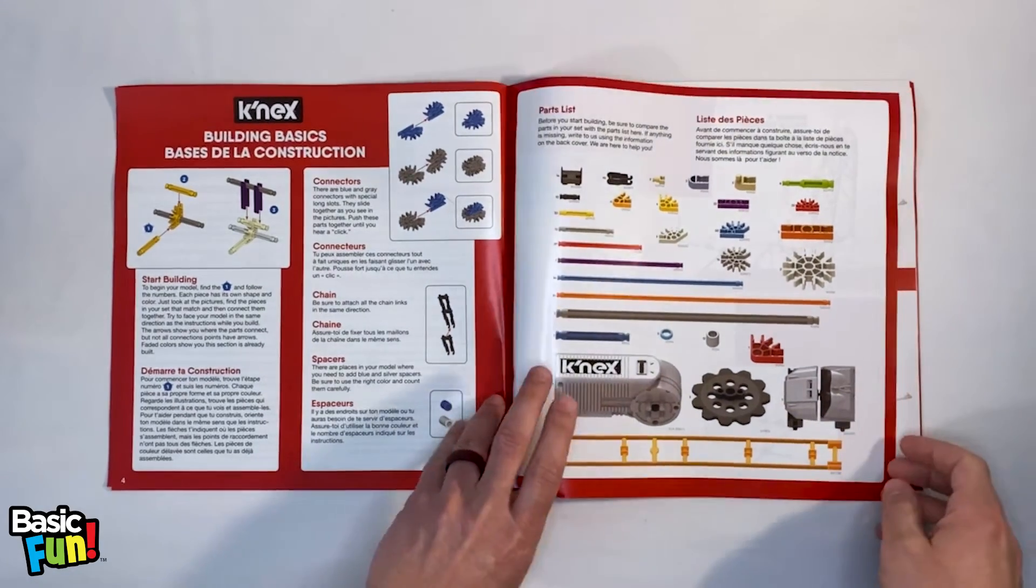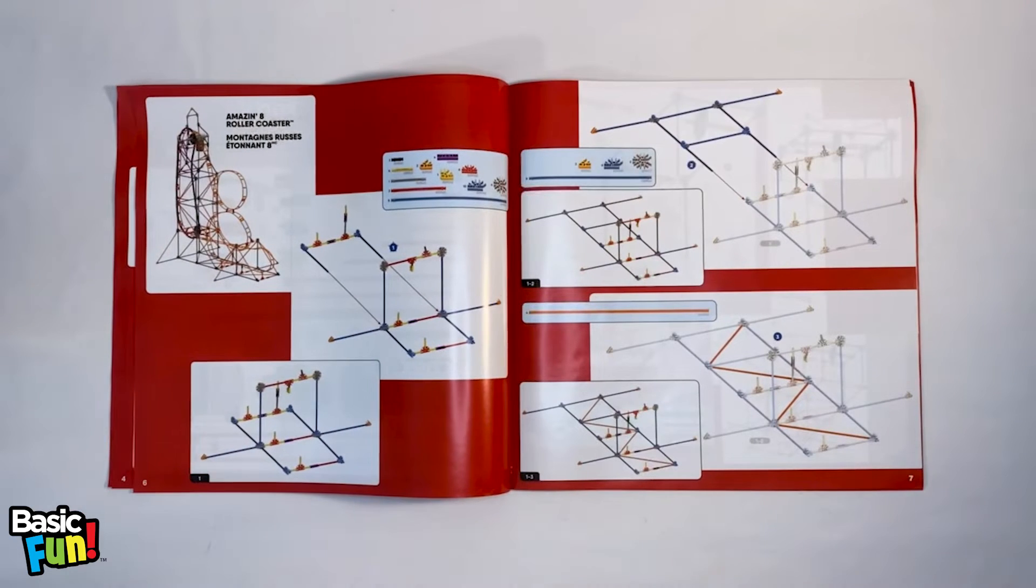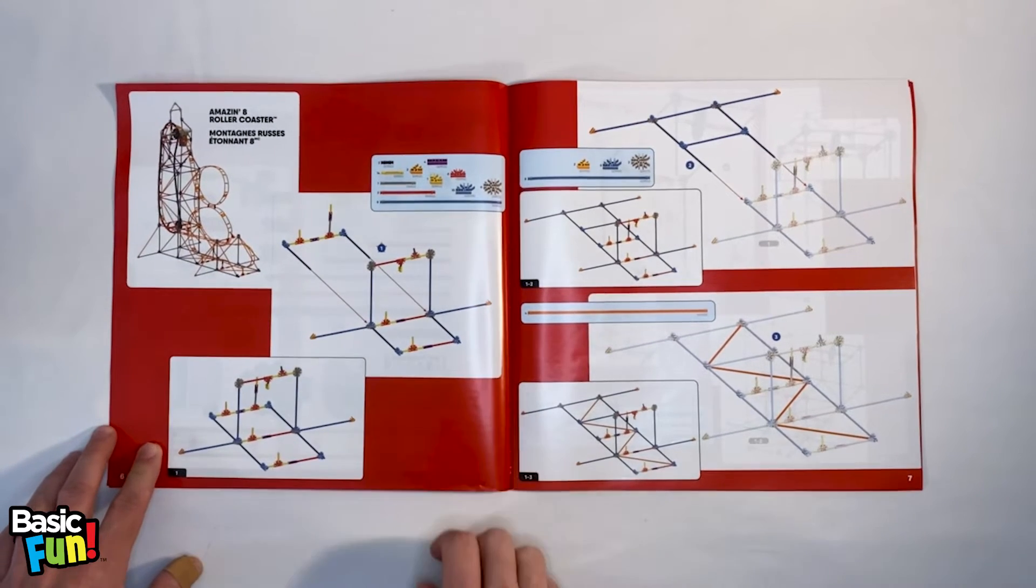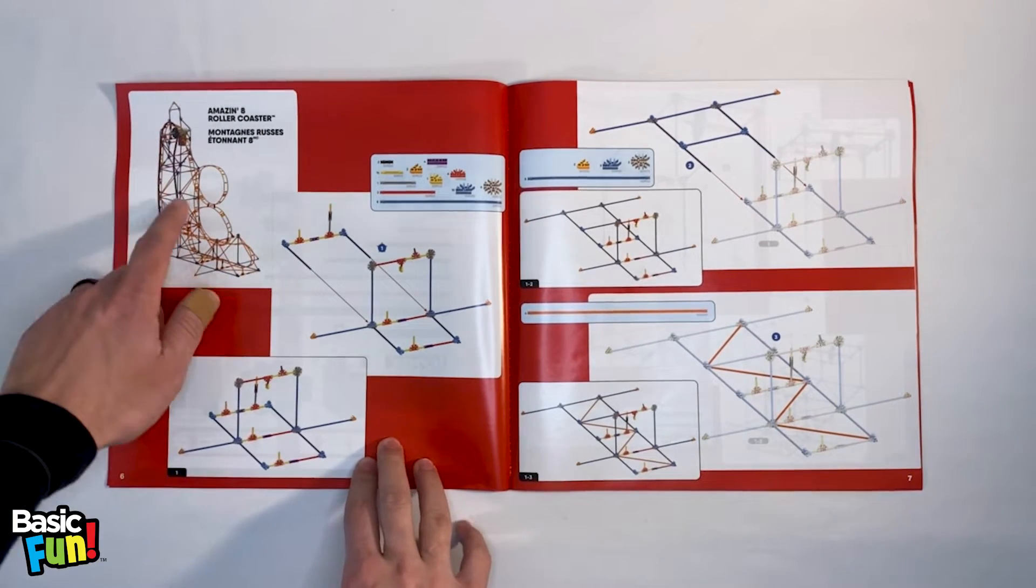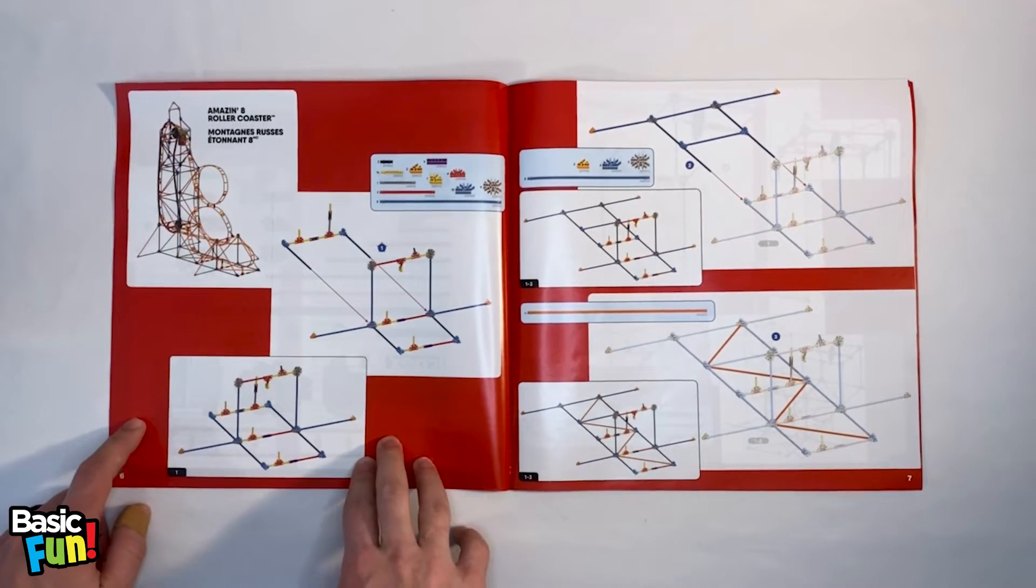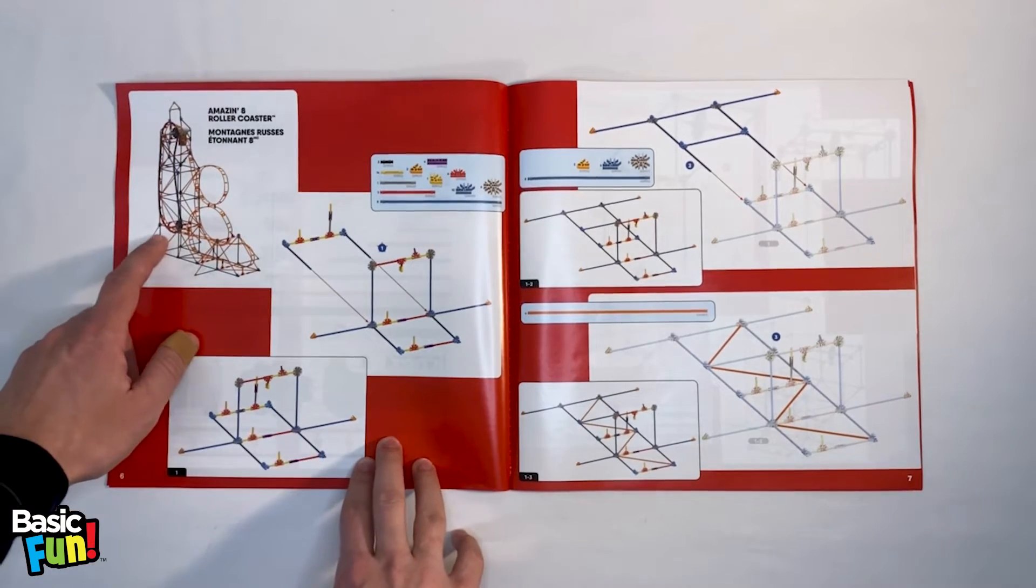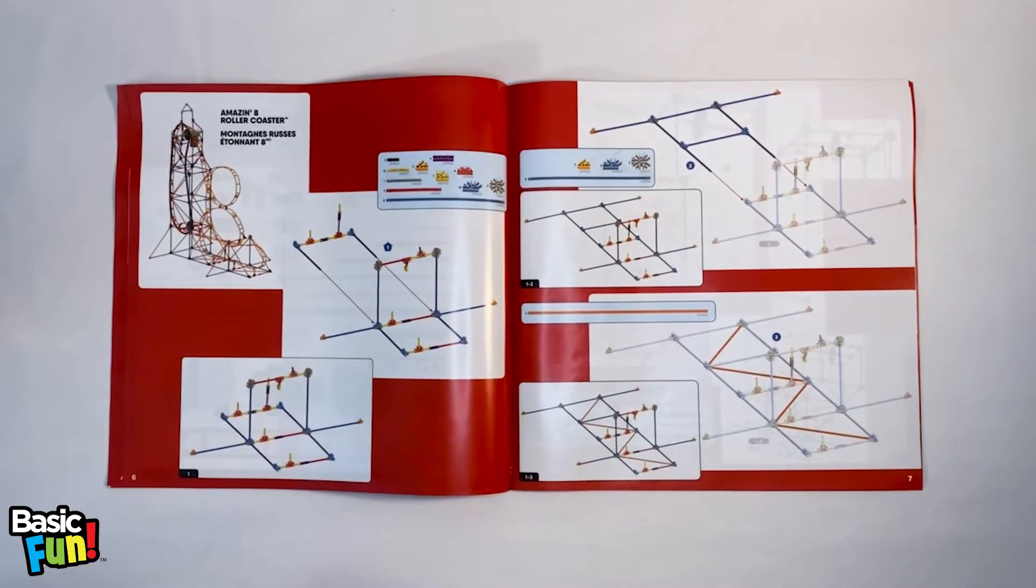If we flip to the next page, this will begin the actual Connects build. With any Connects instruction manual for a roller coaster, the same progression of steps will occur. First, the frame will be constructed. This supports the track of the coaster. Then the track will be added one piece at a time to the frame. Lastly, the chain will be added. Okay, let's begin the build.